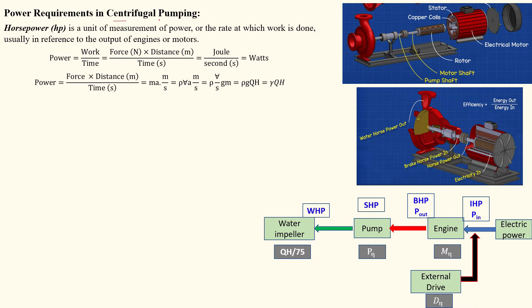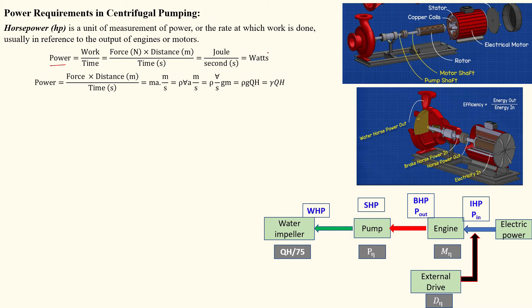Power requirement in centrifugal pumps is the most important concept. Power is defined as the rate at which work can be done. Power can be represented in two units: horsepower (HP), which is the imperial unit, and watts or kilowatts, which are the SI or MKS units. Power equals work divided by time. Work is force into distance — force in newtons, distance in meters. Newton-meter is called a joule, and joule per second is a watt.